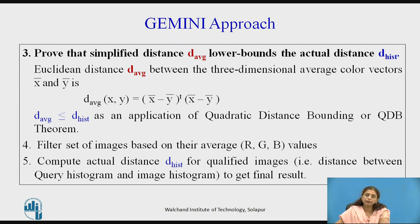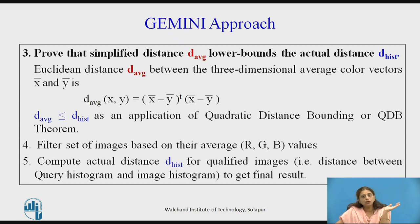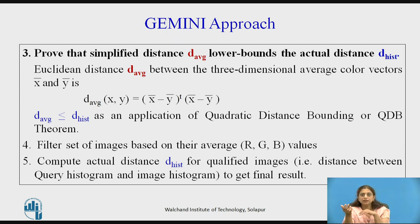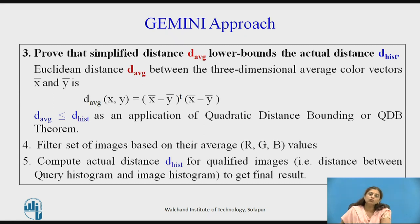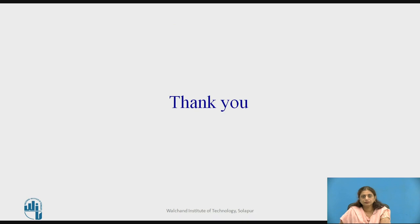For those twenty qualifying images only, the actual distance is computed using the d-hist formula. The twenty distances are computed and images whose distance is less than or equal to the tolerance are added to the result. We found RGB vectors for every image and the query image, comparing red with red, blue with blue, and green with green — solving the crosstalk problem. Thousand computations are reduced to the number of qualifying images, such as twenty, and actual distances are found using d-hist only for those. This is how the Gemini approach makes searching and indexing faster. Thank you.